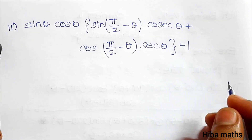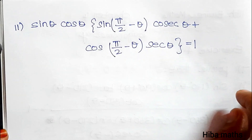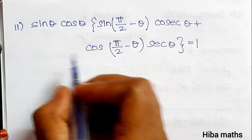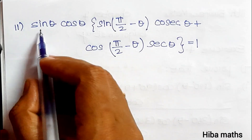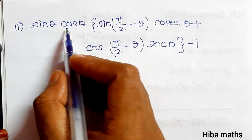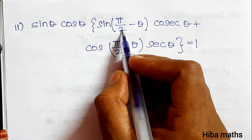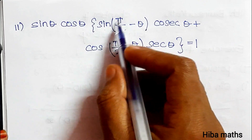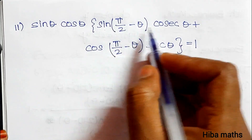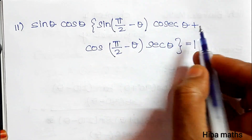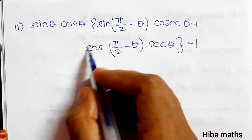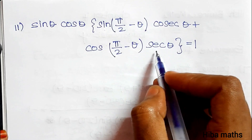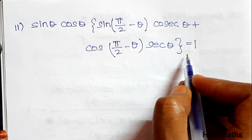Now the second sub-question: prove that sin θ · cos θ · sin(π/2 − θ) · cos θ + cos(π/2 − θ) · cos θ · sec θ = 1.